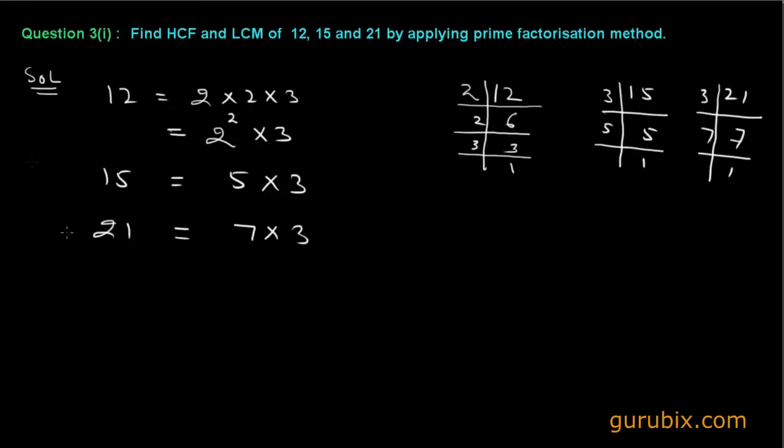Now it is very easy to find out the HCF because we know that the HCF is the highest common factor. We see that 3 is common in all three numbers. So HCF is 3.